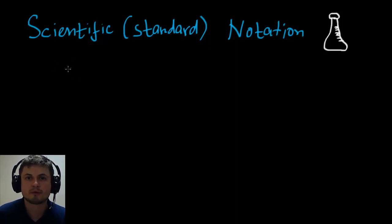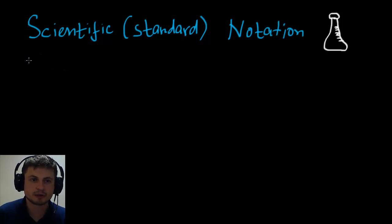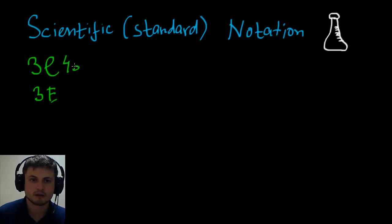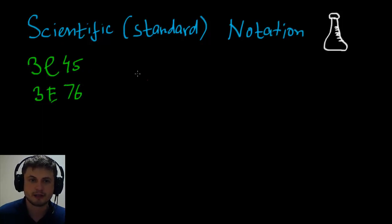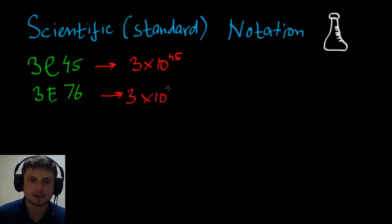When the number is really really big — beyond billions and trillions — we have to use this notation. You've probably seen it before on your calculator when you get a really big number; it will usually give you a number followed by the letter E. So something like 3E45 or 3E76. What this actually means is 3 times 10 to the power of 45, or 3 times 10 to the power of 76.